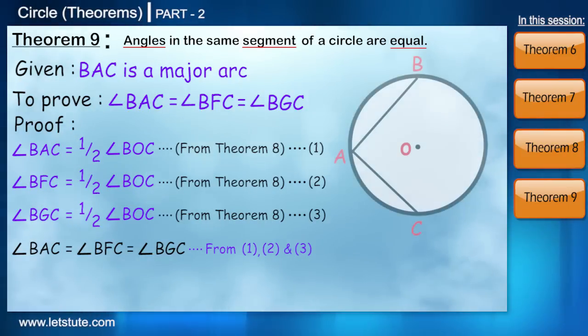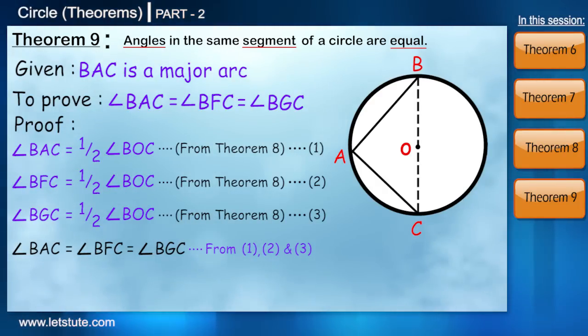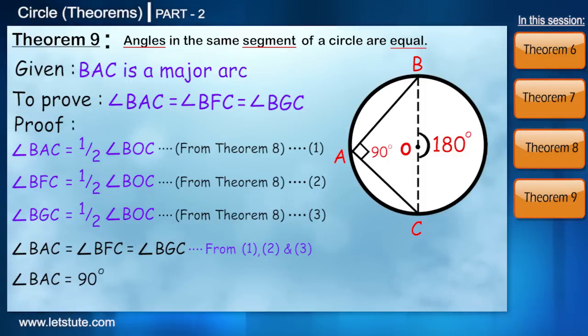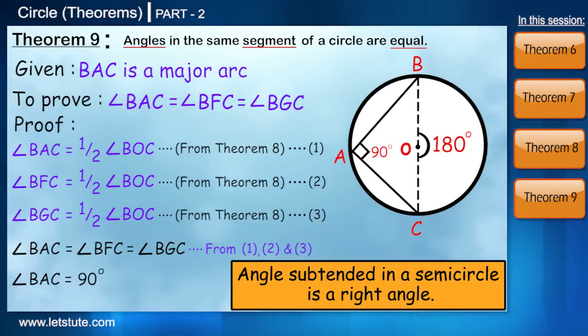There's just one special case in here. Suppose that BC is passing through the center of the circle. In this case, the segment we have is a semicircle. We know angle BAC is equal to half of angle BOC. Therefore, we can say that BAC is equal to 90 degrees. Since BOC is nothing but the straight line here and we know a line is of 180 degrees. So from this, we can conclude that angle subtended in a semicircle is a right angle.